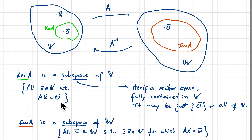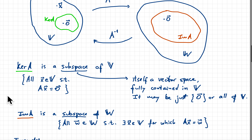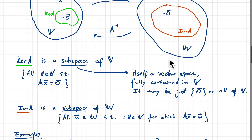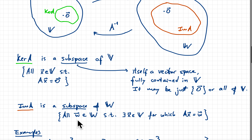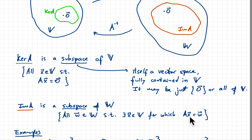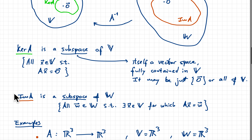These properties are inherited from the defining property of the kernel — vectors annihilated by A. The image of A within the space W is also a subspace, but of W. It's made out of all vectors W in the space W such that there exists an X in V for which A applied to X gives W.